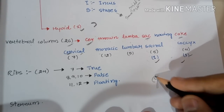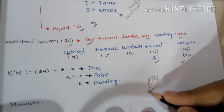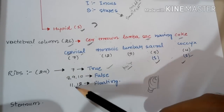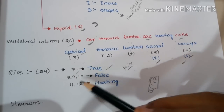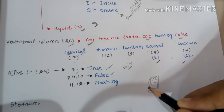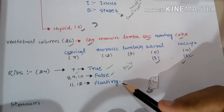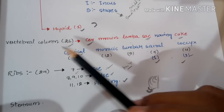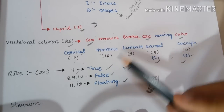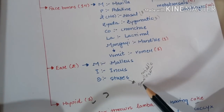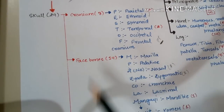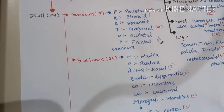Now, ribs: there is a structure behind the ribs called the sternum, and all ribs are paired. There are 12 pairs of ribs, making 24 bones. The starting 7 pairs are true ribs; the 8th, 9th, and 10th pairs are false ribs; and the 11th and 12th pairs are floating ribs. This question is frequently asked in AIPMT previous year papers, so it is very important.